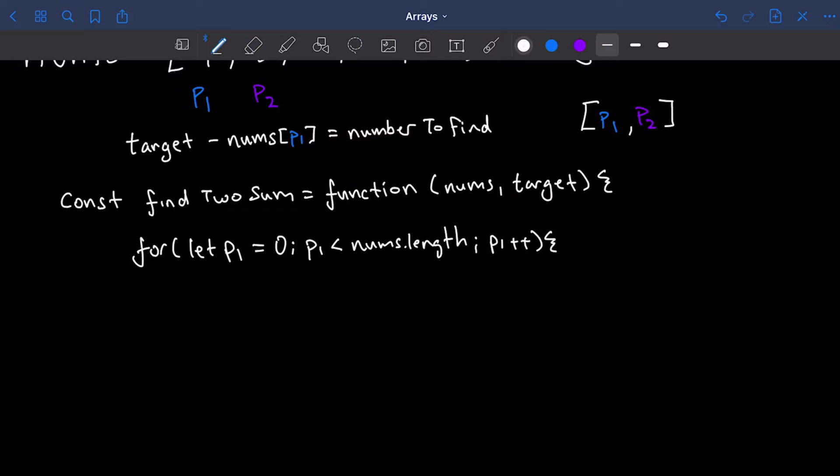Now that we have some pointer to p1, we need to calculate our number to find using this the same way that we did up here. Inside of this function, we're just going to do it in a coding way now. And we want to save that value to some constant, and we're going to call it the number to find. This is going to be equal to target minus nums at p1.